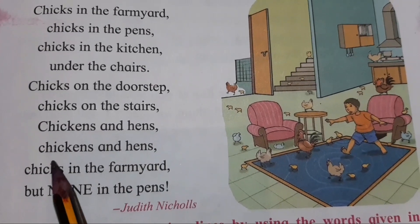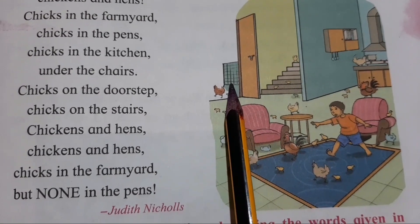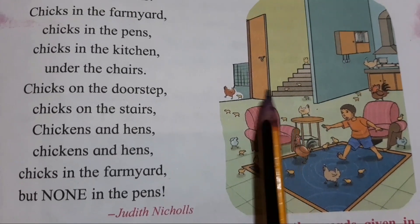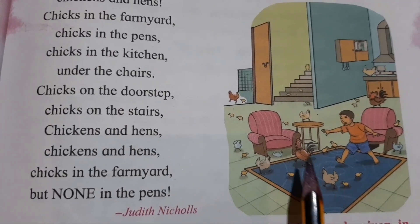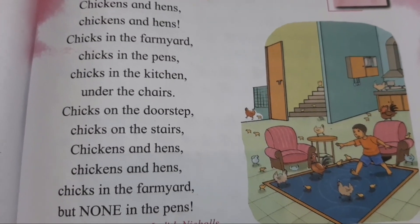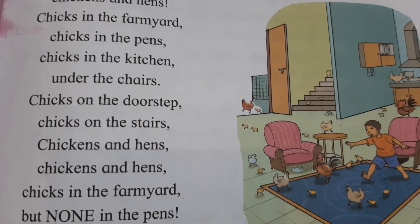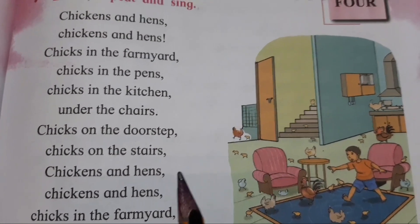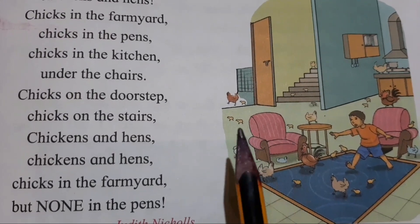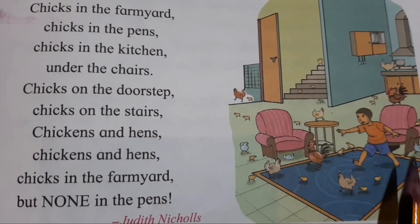Chickens and hens, chickens and hens. Chicks in the farm yard, but none in the pen. Matlab, sab jagah hai — only pen mein nahi hai. Pen ke andar nahi hai, baaki sab jagah pe hai. Kitchen mein hai, chair ke neeche hai, stairs pe hai, doorstep pe hai. Jab unhe pen se nikala jata hai bahaar, toh wo yahaan wahaan sab jagah dhodte hain — that's what the poet is saying. As you can see, they are on the mat, under the chair — everywhere.